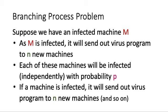Now let us look at the branching process problem. Suppose we have a certain infected machine M, infected with some computer virus. Because M is infected, it will send out a virus program to N new machines not seen before. Each of these machines will be infected independently with probability P. Any newly infected machine will further repeat the process, sending the virus program to N new other machines, and this continues on and so forth.